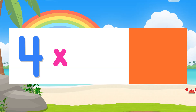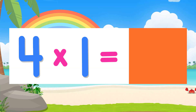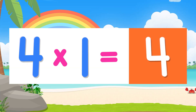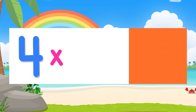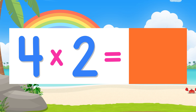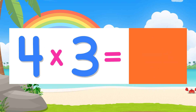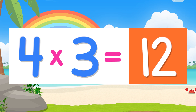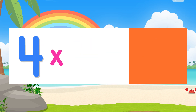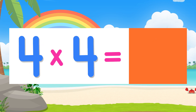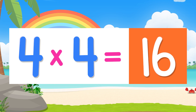Four times one is four. Four times two is eight. Four times three is twelve. Four times four is sixteen.